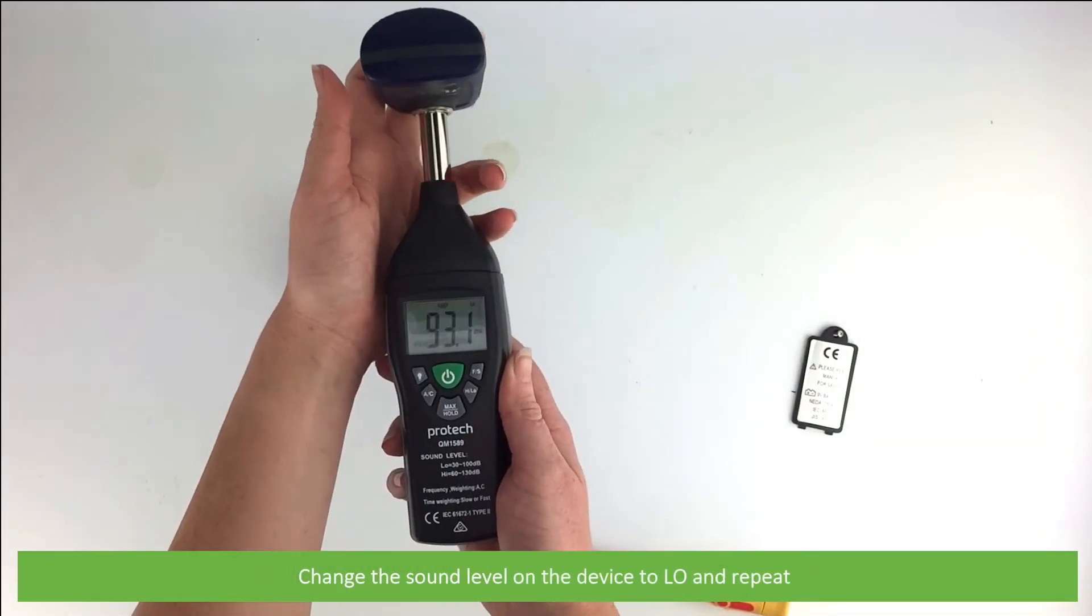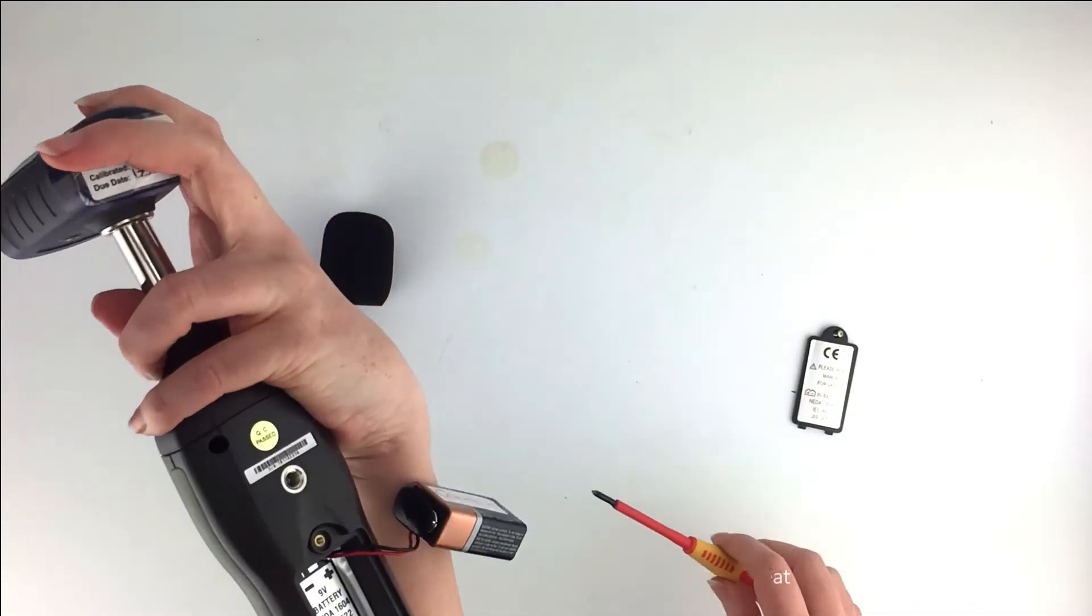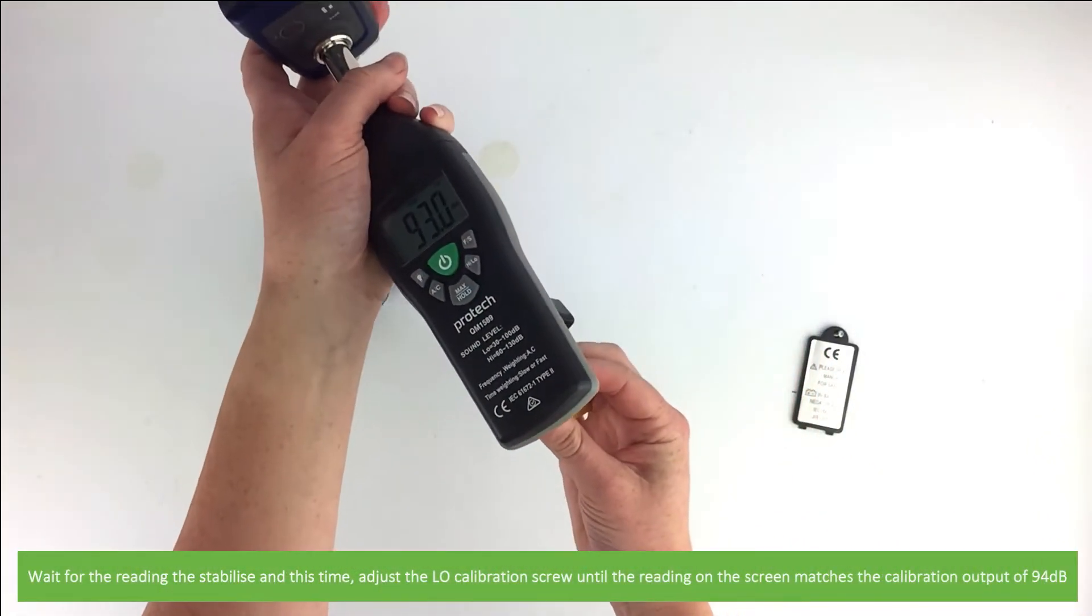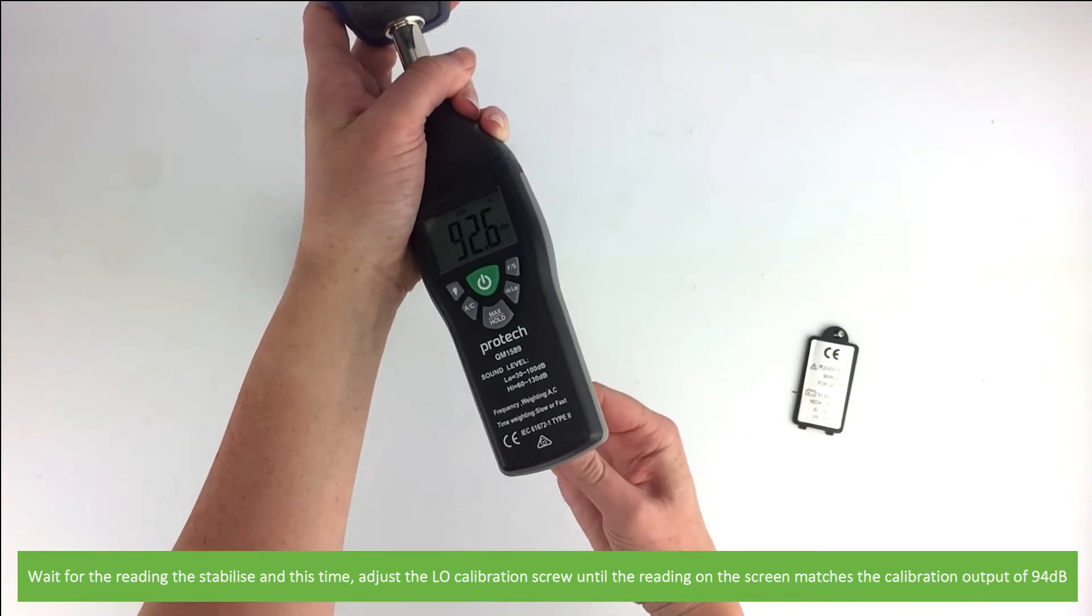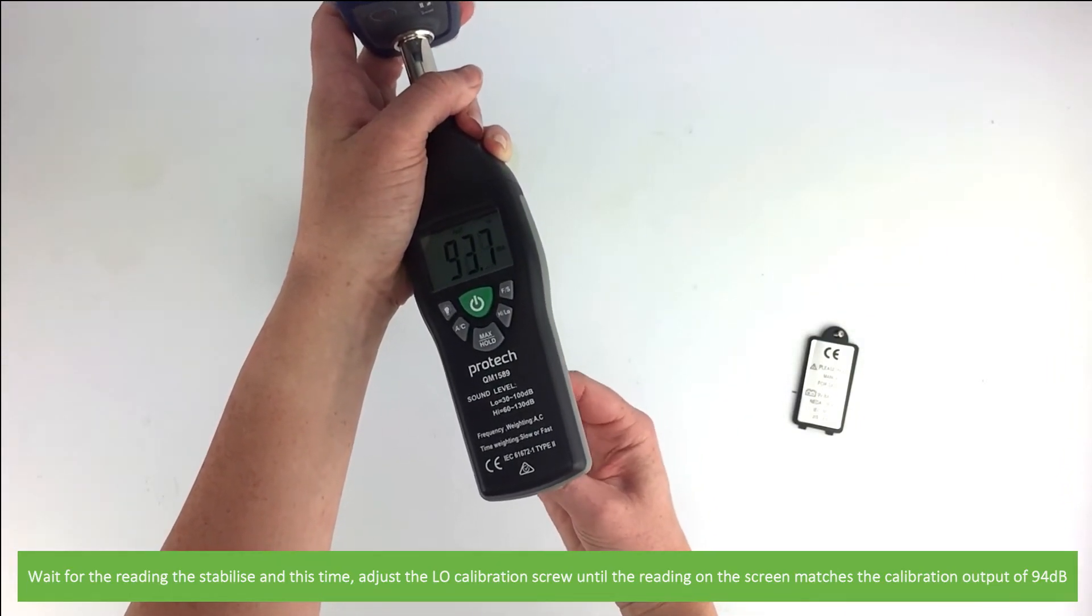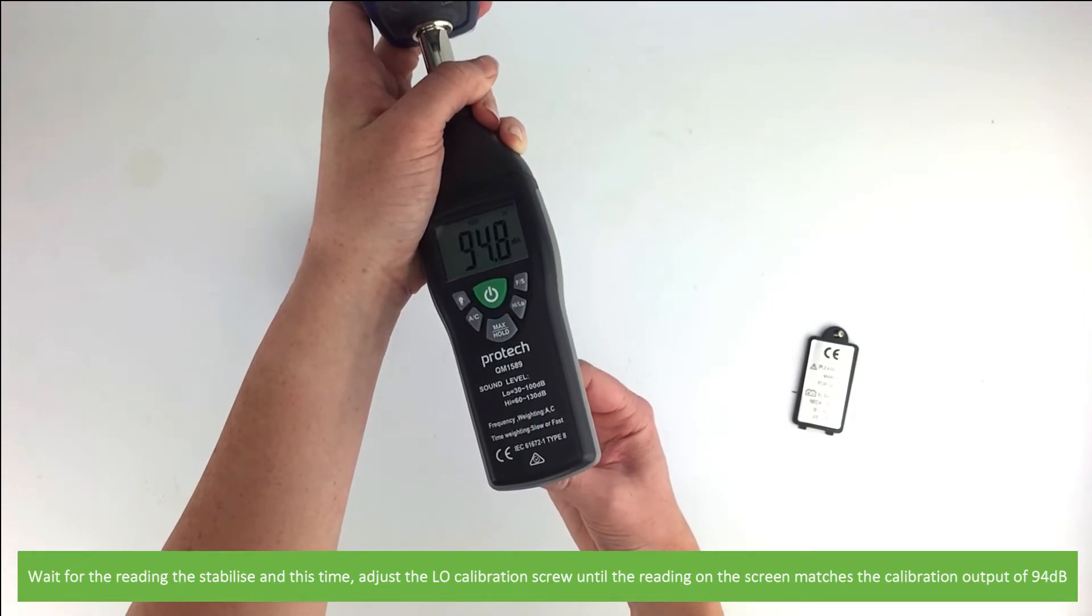All there is to do is reset the low calibration. Change the sound level to low on the meter and repeat. Wait for the reading to stabilize. And this time adjust the low calibration screw until the reading on the screen matches the calibration output of 94 decibels.